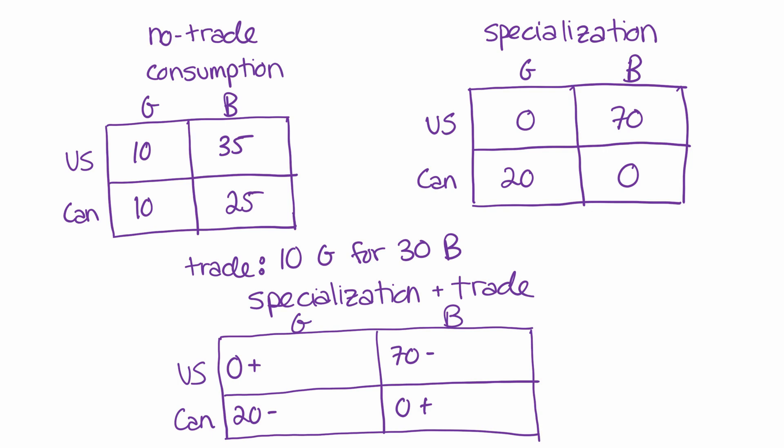So here, rather than having the trade as five guns for 15 butter, it's just twice as big that we're now trading 10 guns for 30 butter. Notice that the price of the trade hasn't changed, that the price of a gun is still three butter. But let's look at how the impact is actually different. And we can do the same exact thing, just implement the trade.